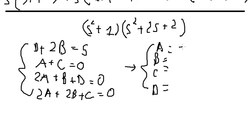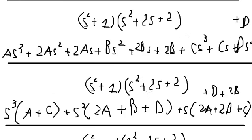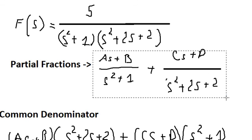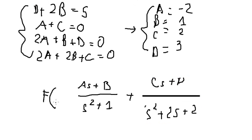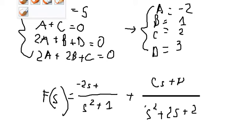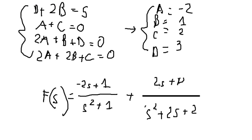We get A equals negative two, B equals two, C equals two, and D equals three. After finding A, B, C, D, we return back to the partial fraction expression.